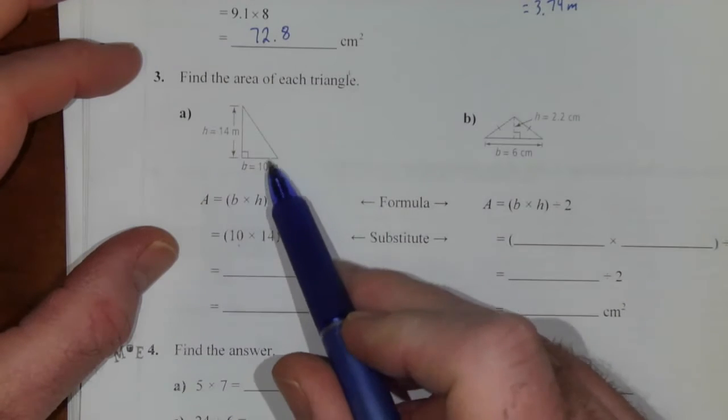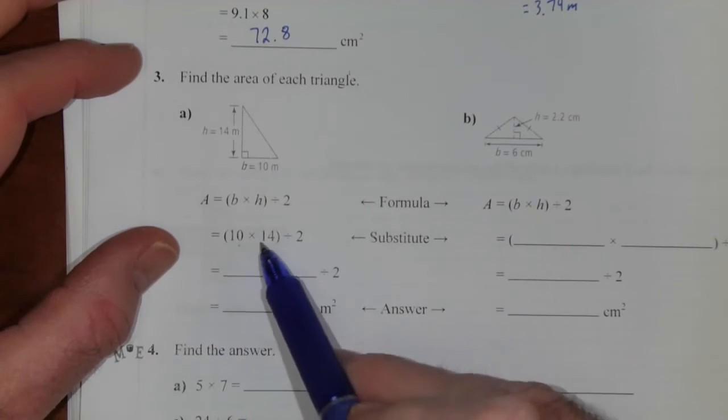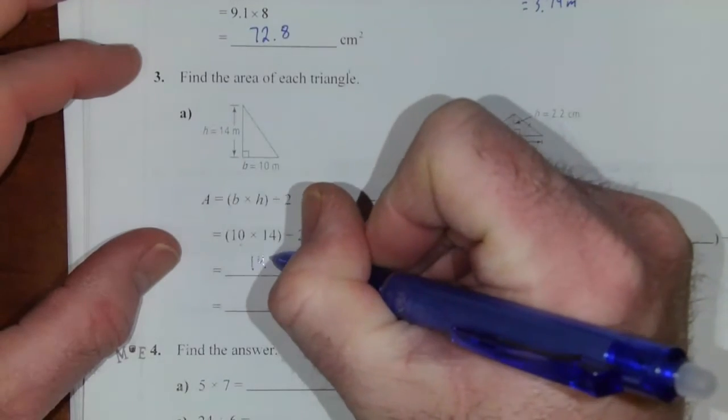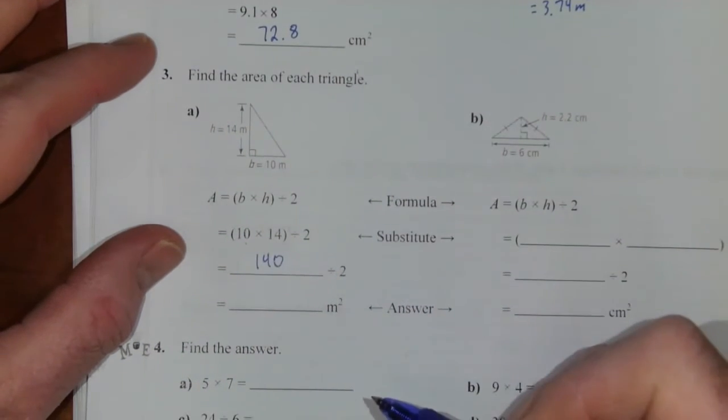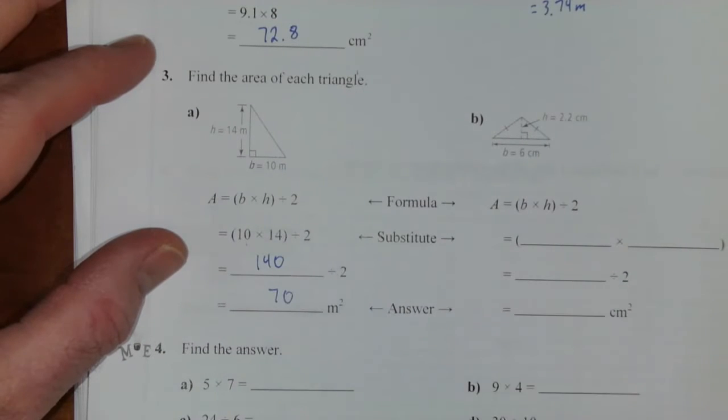So 10 times 14 divided by 2. Well 10 times 14 is 140. And then you divide that by 2. So you get 70 meters squared.